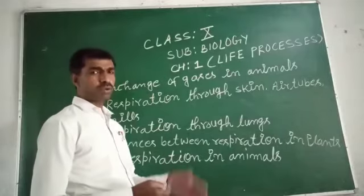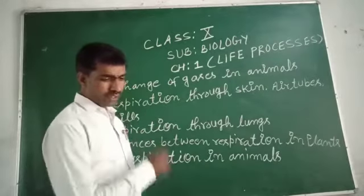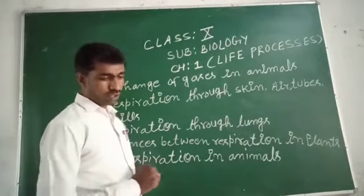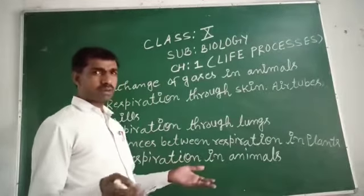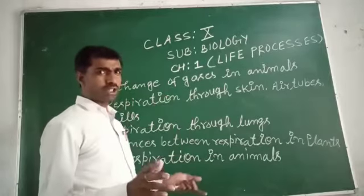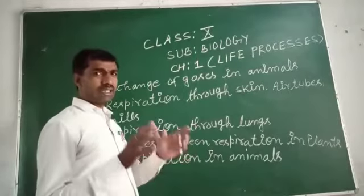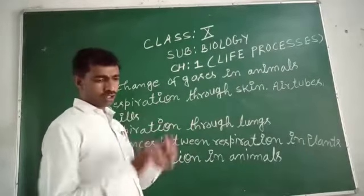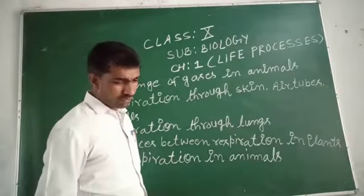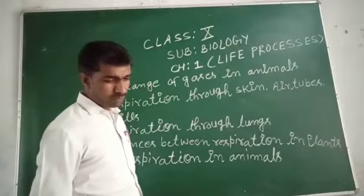What happens in respiration through gills? Aquatic organisms breathe in dissolved oxygen from water. Aquatic organisms are organisms which live in water. The amount of dissolved oxygen in water is very low compared to the amount of oxygen present in air.